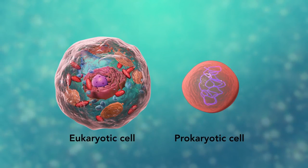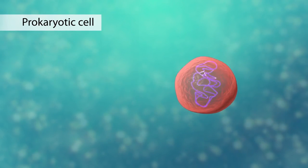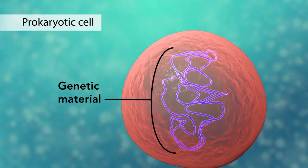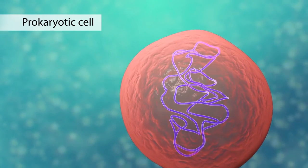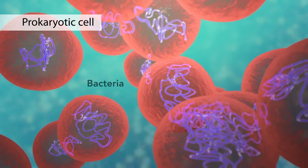The second category is prokaryotic cells. They don't have a nucleus or membrane enclosed organelles. They do have genetic material but it's not contained within a nucleus. Prokaryotic cells are always one-celled or unicellular organisms such as bacteria.